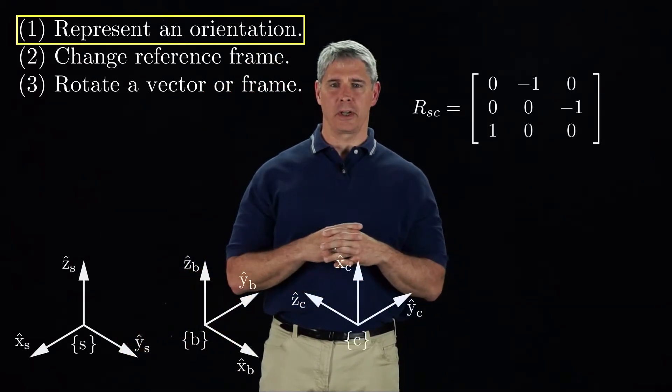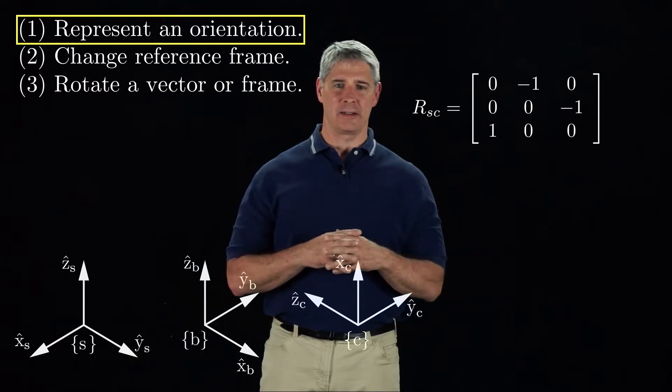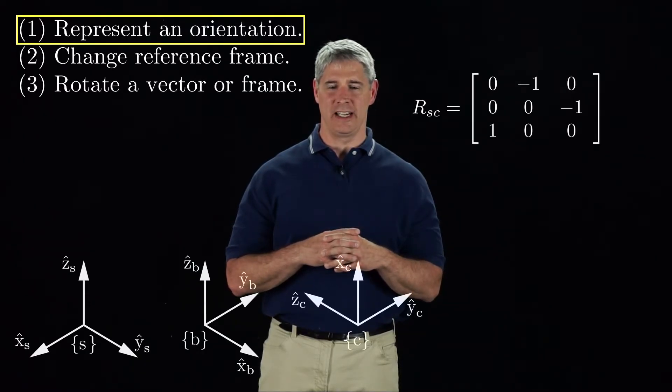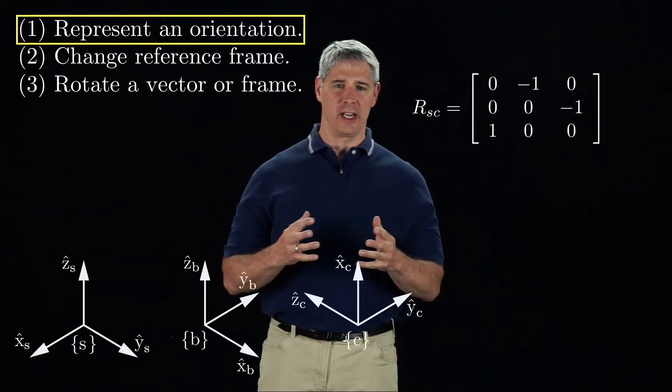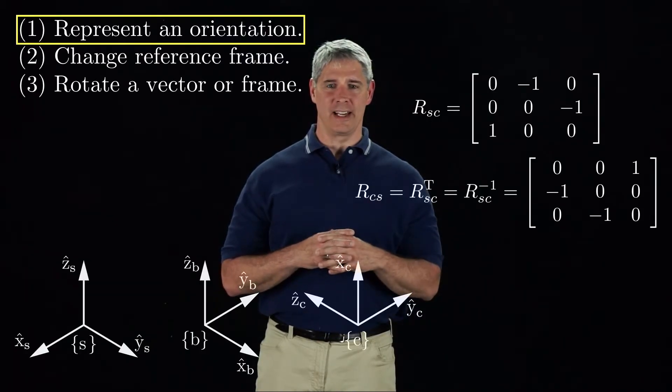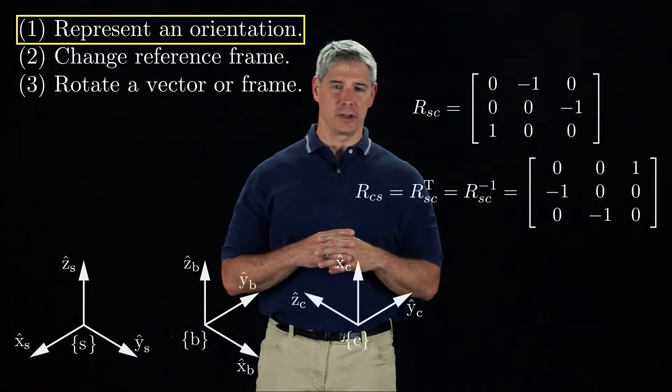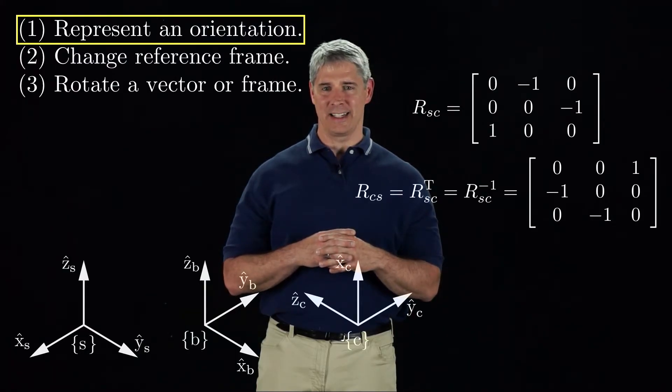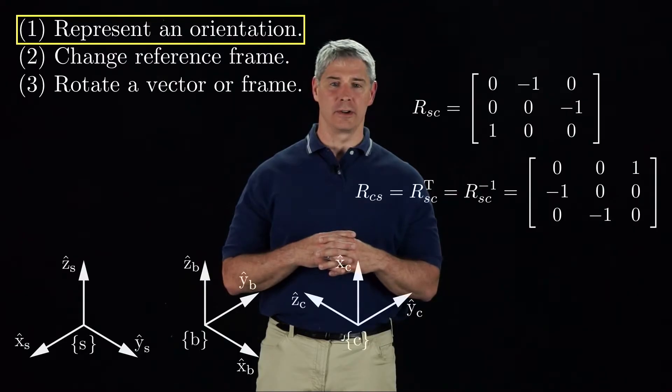As we saw in the previous video, we can represent C relative to S by writing the coordinate axes of C in S coordinates, yielding the rotation matrix RSC. If we write the coordinate axes of S in C coordinates, the resulting rotation matrix RCS is just the transpose, or inverse, of RSC.